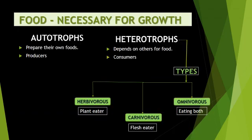Next, food is necessary for growth. We all know that food is a basic necessity for all living things. We get food from plants. Plants are called producers. They are also called autotrophs. That is, they prepare their own food by the process of photosynthesis.